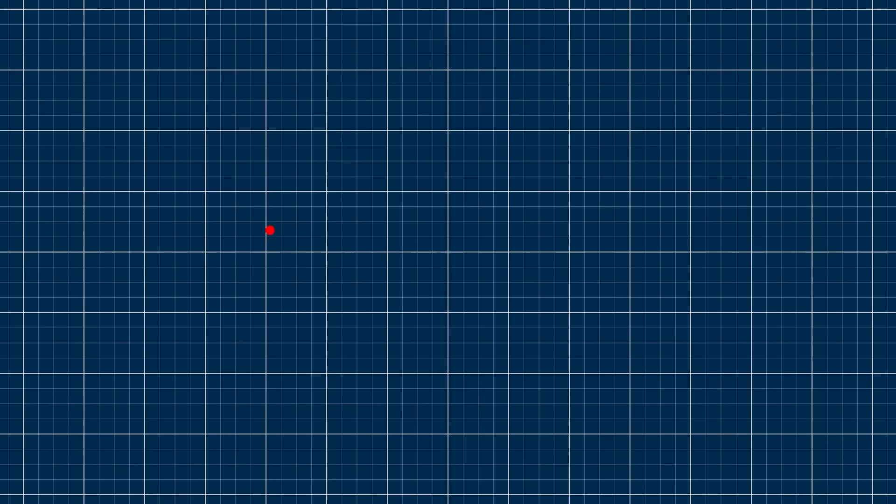It turns out that there's a duality between points and lines. That is, every line has a dual point, and every point has a dual line.